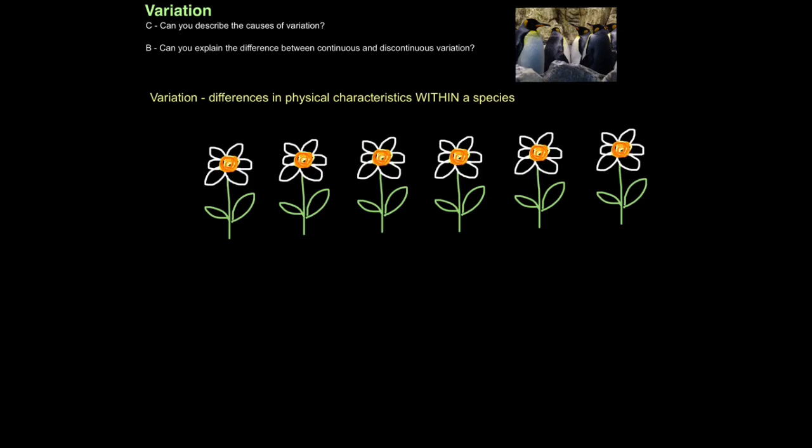So why is variation actually important? Well let's say for example that these plants are exact identical clones of each other. There is no variation between them. Well for one thing, if there was no variation in the world, it certainly would be a much less interesting place.